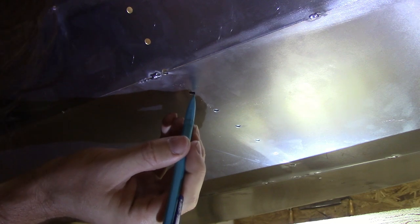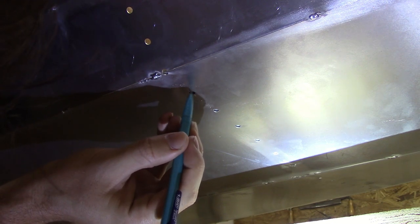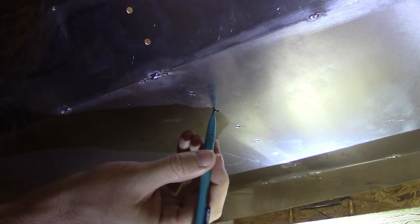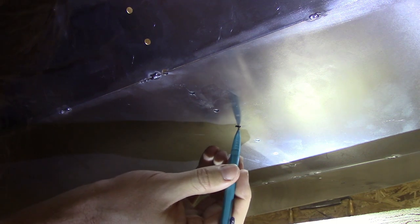So I decided to modify the frames to accept screws and just seal them with silicone later. To do this, I scribed lines on pieces of flat bar and aligned them with the holes in the skin before marking their positions. Then I drilled and tapped each hole.